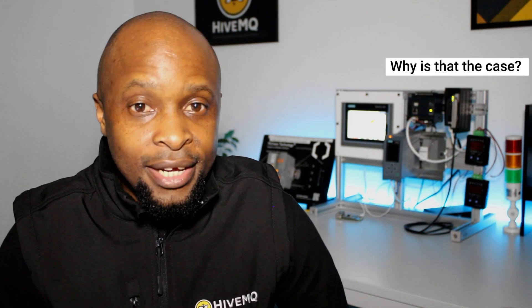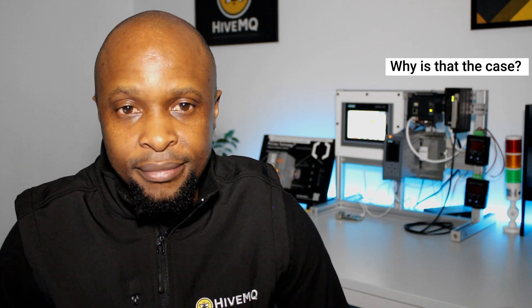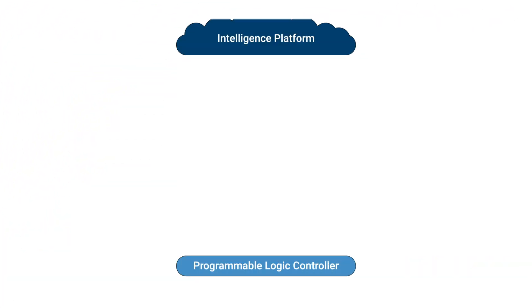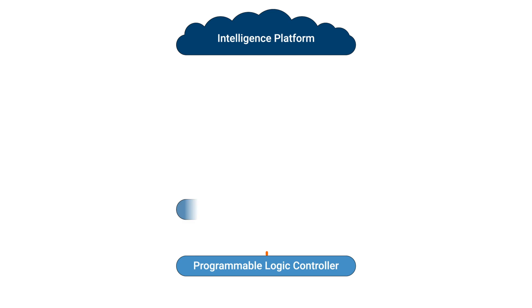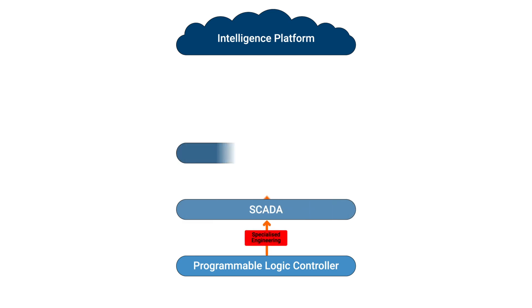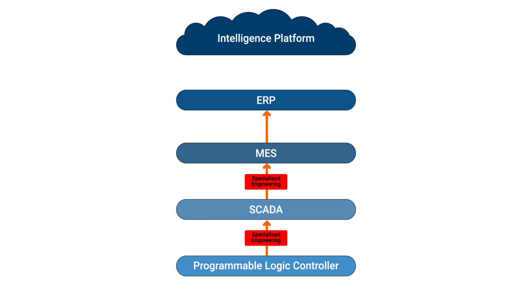You might ask, why is that the case? Let's explore an example. Let's say you intend to make data from a programmable logic controller available to an intelligence platform in the cloud. Using the ISA-95 functional model, you would require specialized engineering to get the data into your SCADA system and additional engineering resources to get it from SCADA into MES and so on until it lands in the cloud. What's worse is that industrial systems use incompatible data formats, meaning each type of equipment or software whose data needs to be integrated requires dedicated engineering efforts by different specialists.